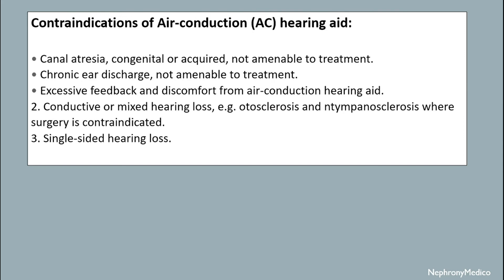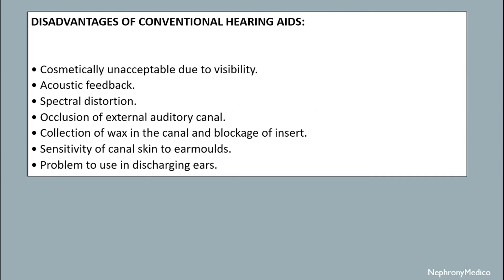Contraindications for air conduction hearing aids include canal atresia (congenital or acquired), chronic ear discharge not amenable to treatment, and excessive feedback and discomfort. Indications for bone conduction hearing aids include conductive or mixed hearing loss and single-sided hearing loss.